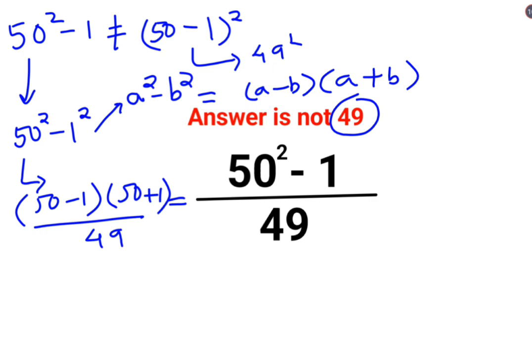So 50 minus 1 is nothing but 49 multiplied by 50 plus 1 is 51 upon 49. So now what happens is, this and this gets cancelled. The answer for this one is supposed to be just 51.